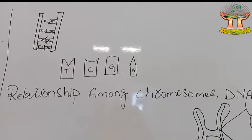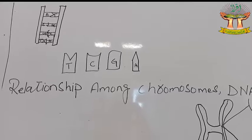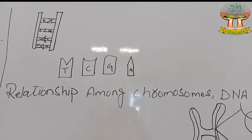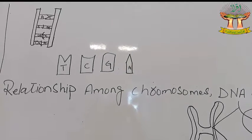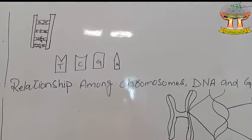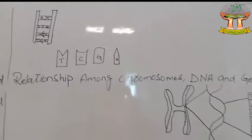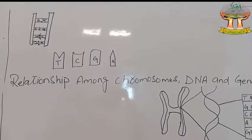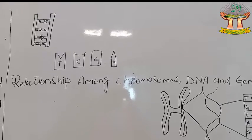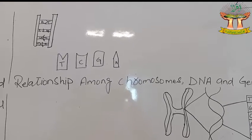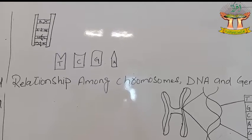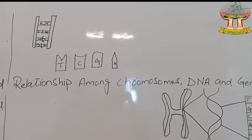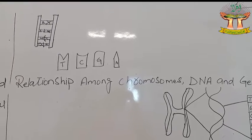The DNA bases are represented as TCGA: T for Thymine, C for Cytosine, G for Guanine, and A for Adenine.